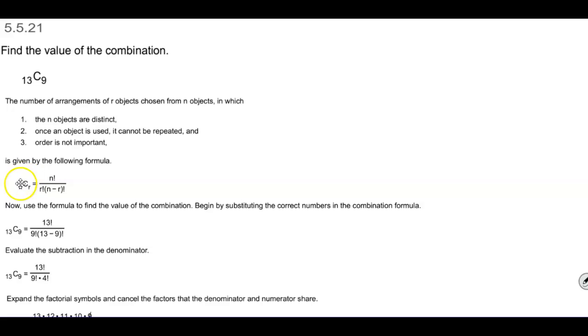Now if you notice from the previous example, the permutation has a different formula. The key part here is that order is not important. For a permutation, order is important.